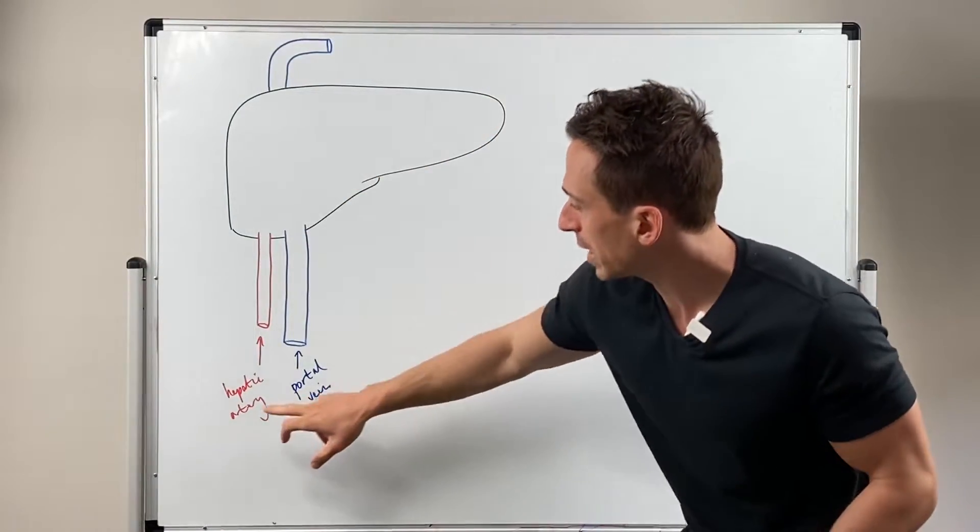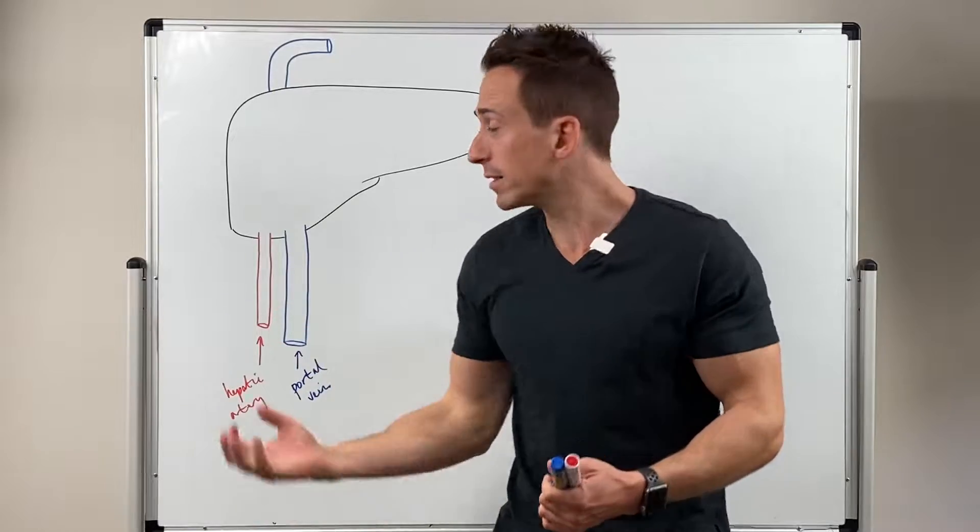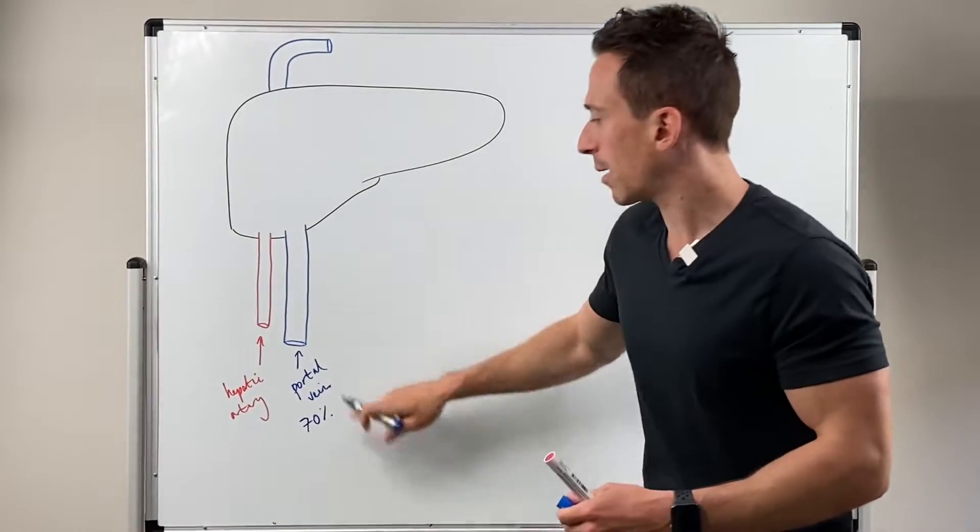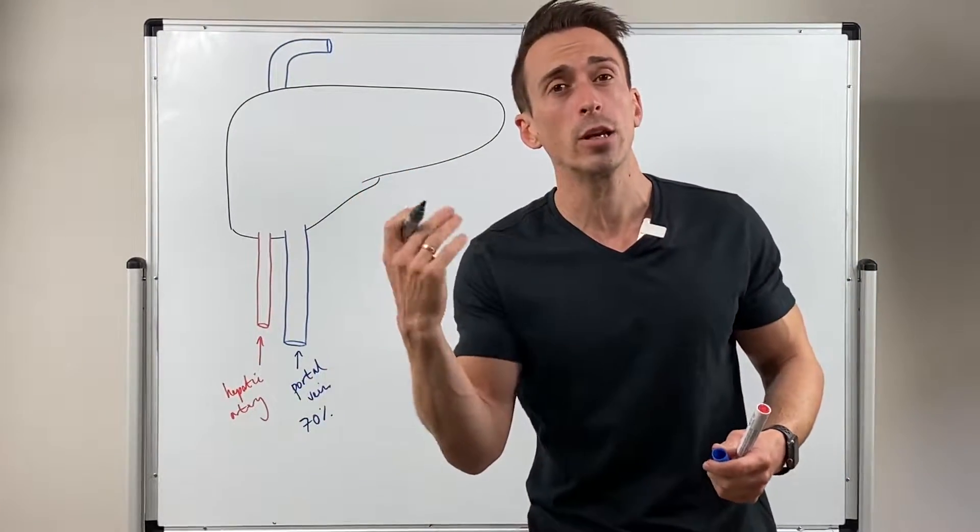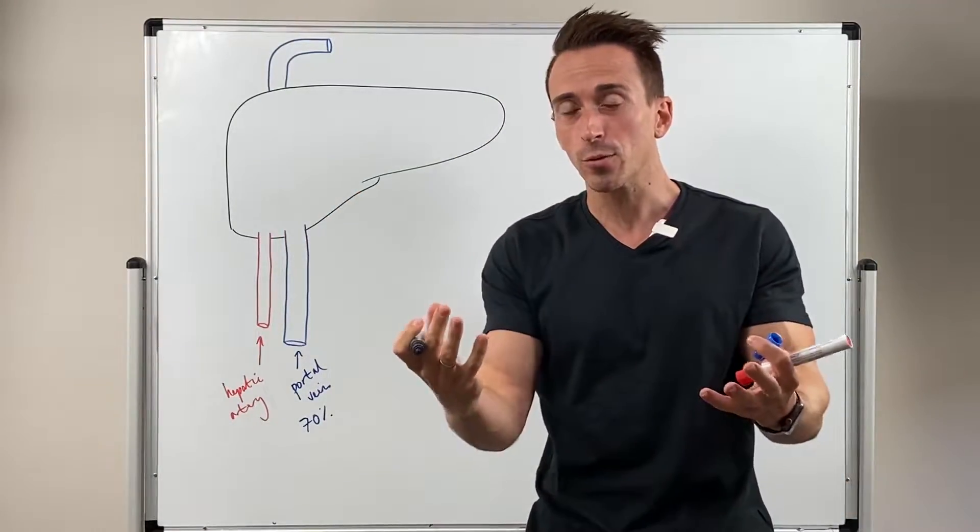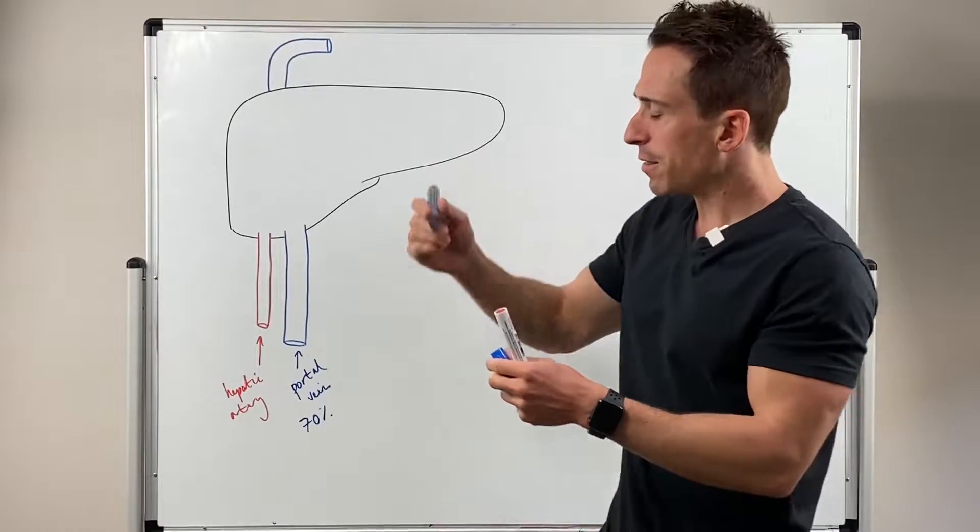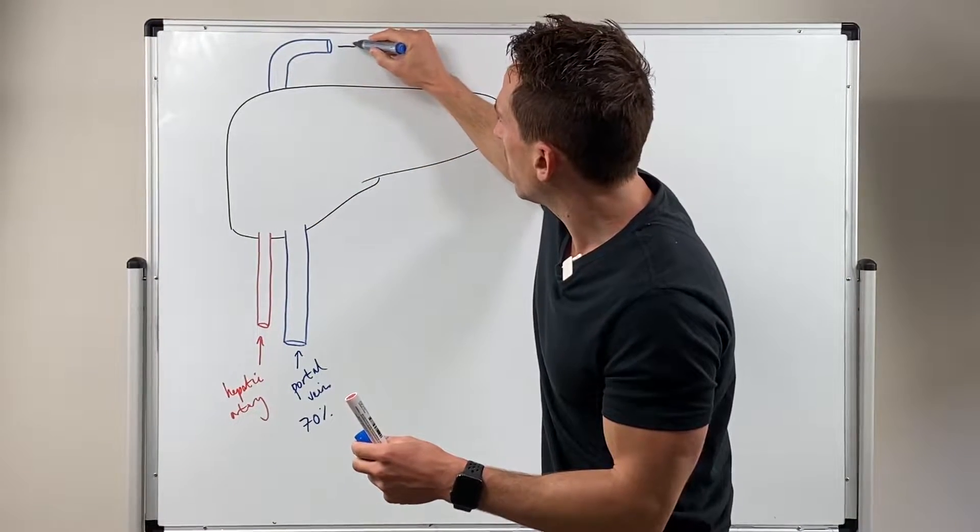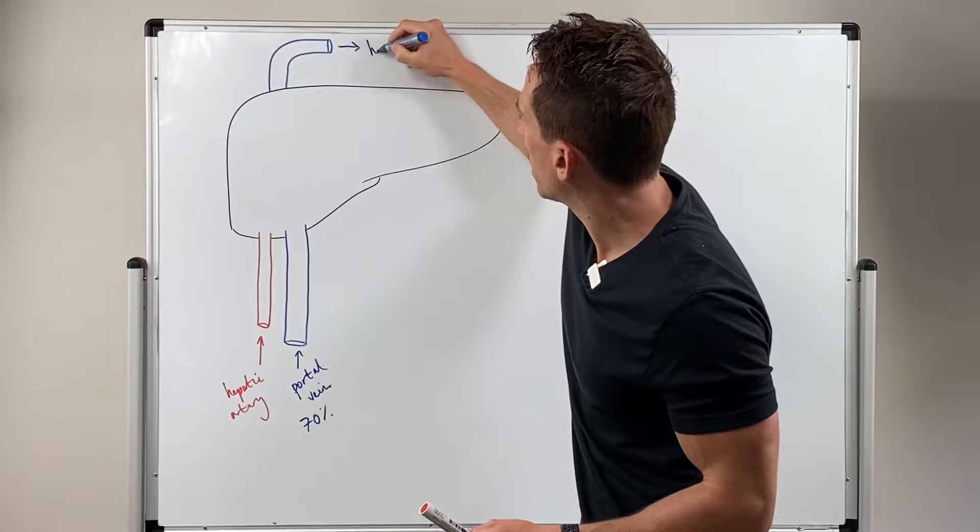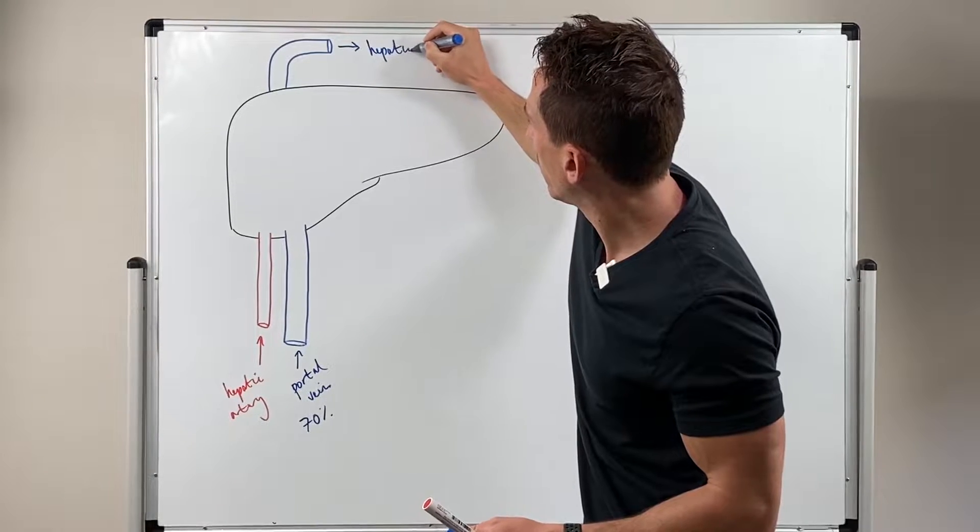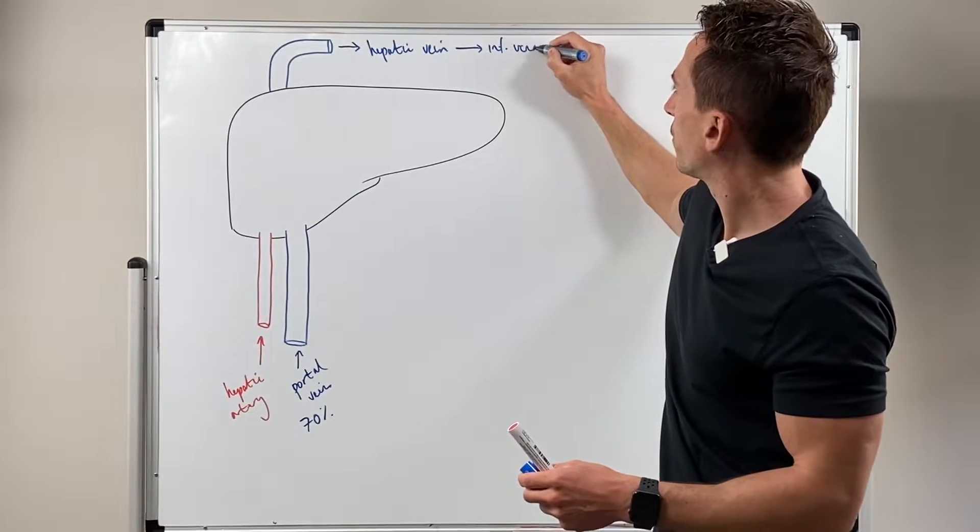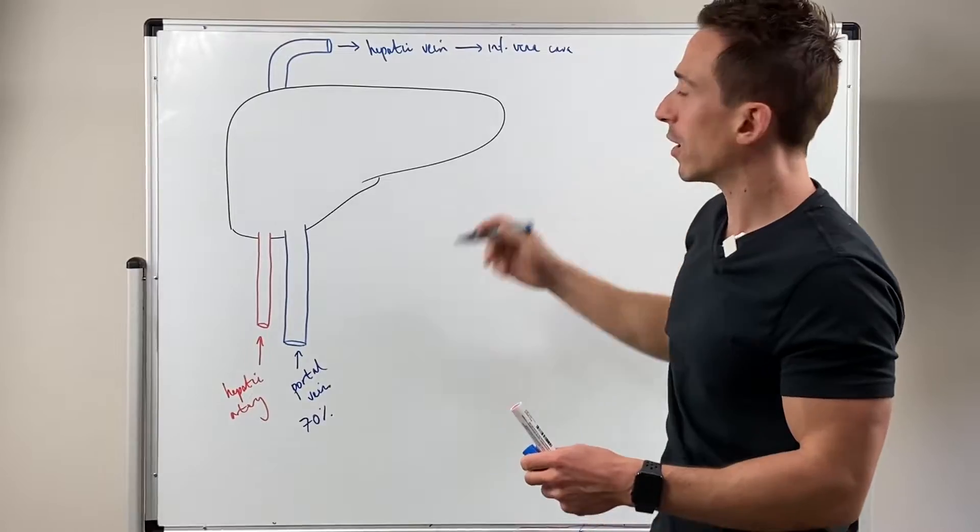Unlike other structures, the liver has both the hepatic artery and portal vein entering it. Around 70% of this blood is coming from the portal vein, and that increases to about 90% after a meal because nutrient-rich blood needs to get to the liver for processing. The liver also has venous vessels coming out, the hepatic vein, which ends up becoming the inferior vena cava which goes back to the heart.